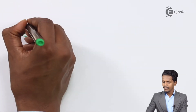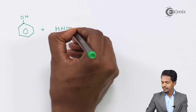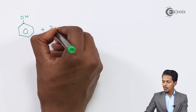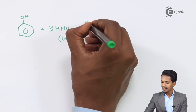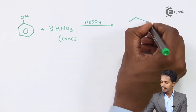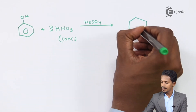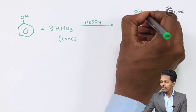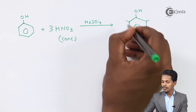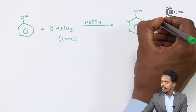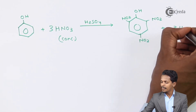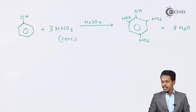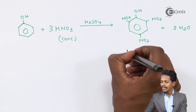If we treat phenol with concentrated HNO3, in this case 3 moles of HNO3 are used, and this reaction occurs in the presence of sulfuric acid. The product obtained is picric acid, where the OH group remains and the hydrogens at the ortho and para positions are all substituted by NO2 groups. The byproduct is 3 moles of water.